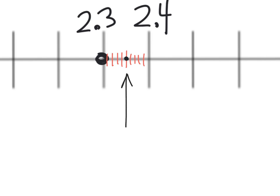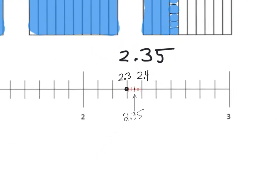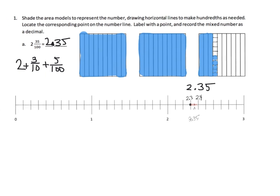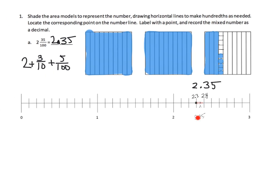That location right there is our two point three five — two and three tenths plus five hundredths. Zooming back out, you can barely see the tick marks they're so small, but that really shows how tiny hundredths really are.